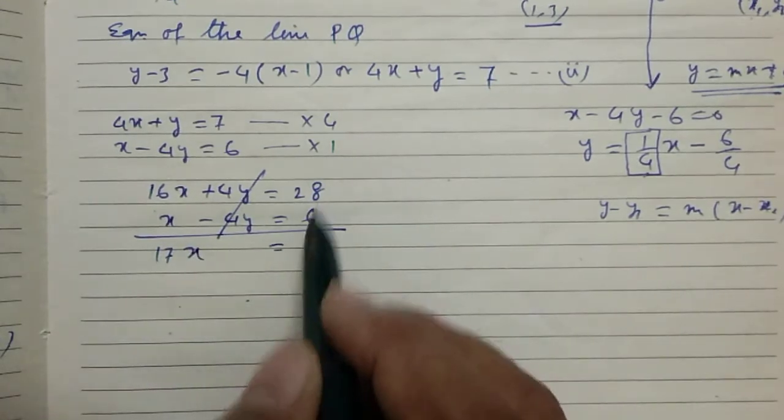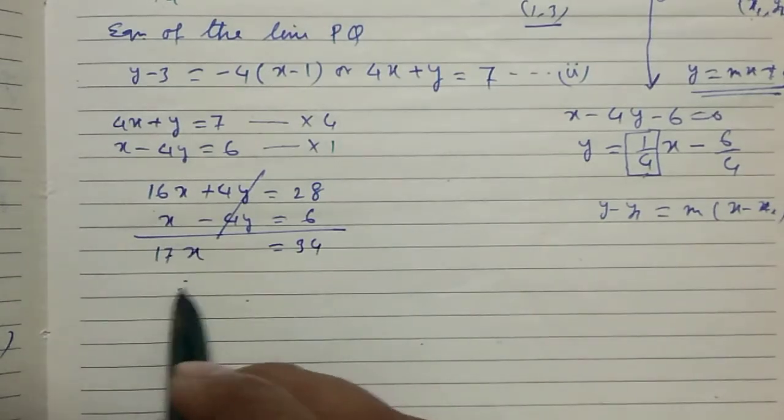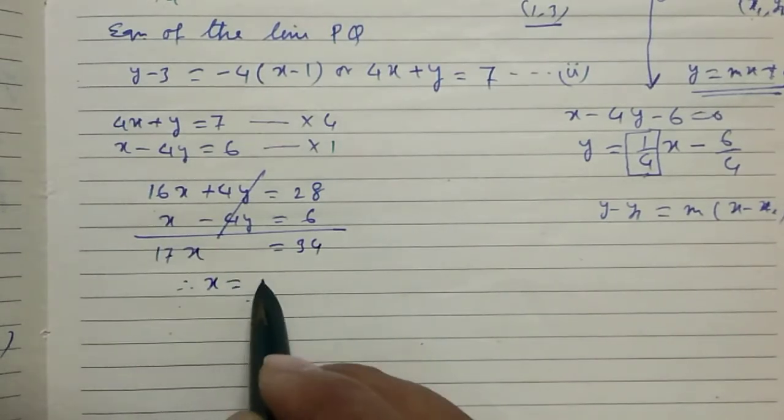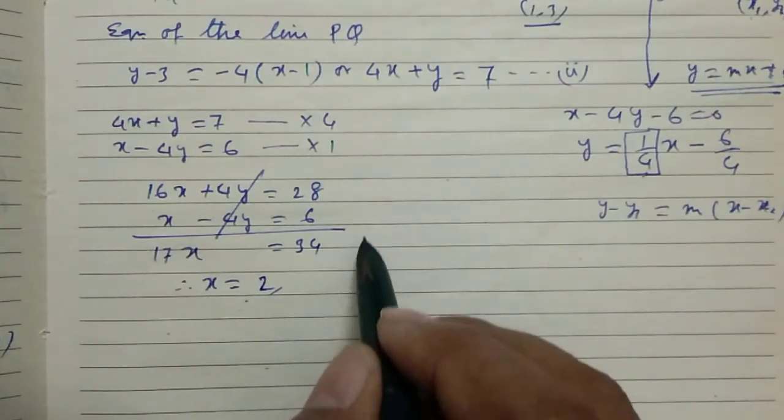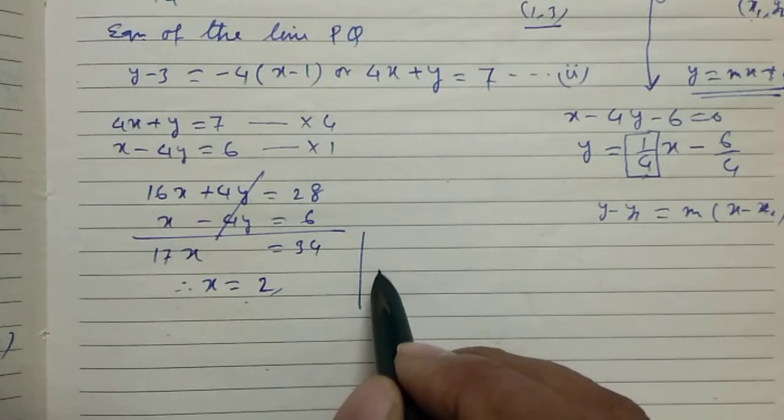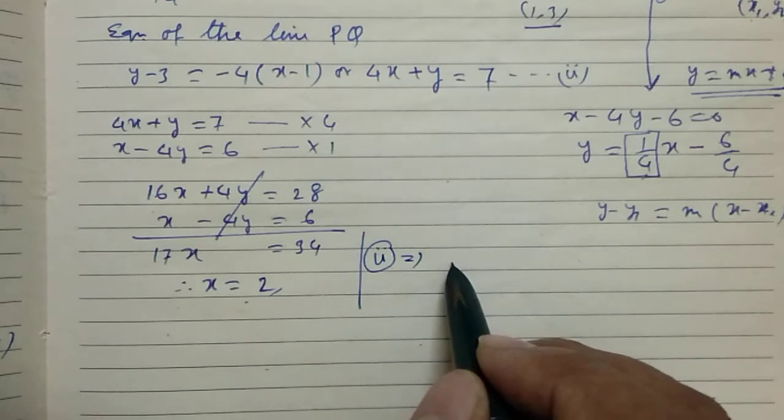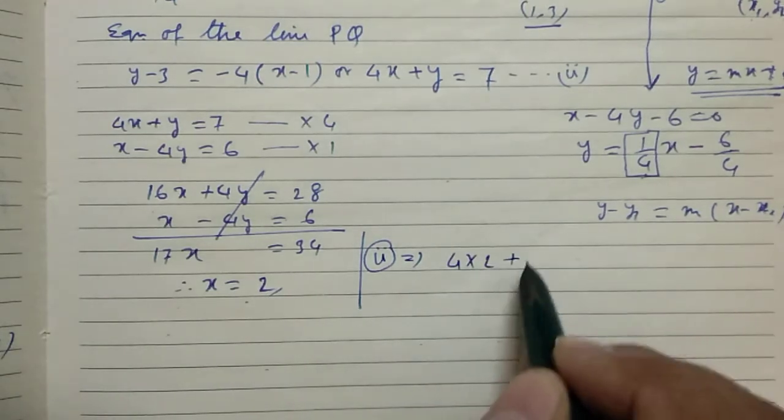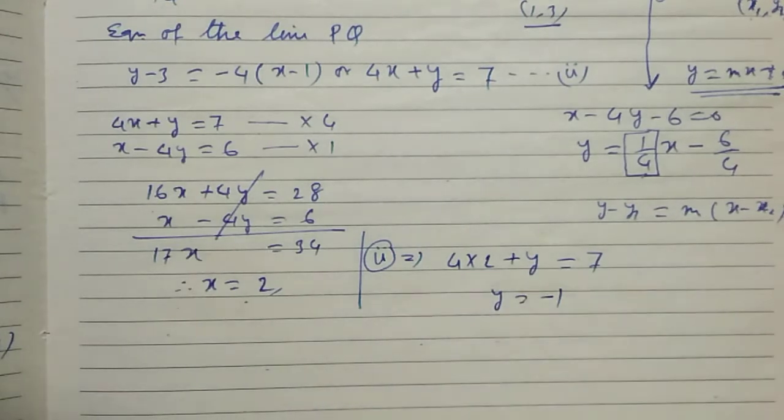17x equals 34, or x equals 2. And from equation 2, we can write 4 into 2 plus y equals 7, y equals minus 1.